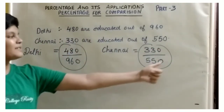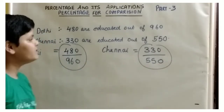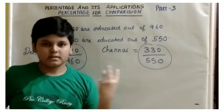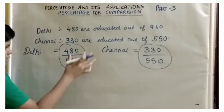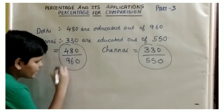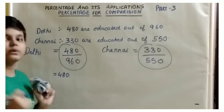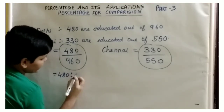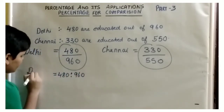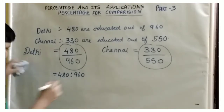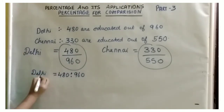How can we compare these? The total number is in the denominator, as we have learned in fractions. Our first step is to convert 480 by 960 into a ratio — 480 is to 960 — this is the value of Delhi. And for Chennai, we have 330 is to 550.